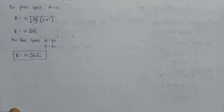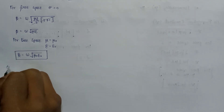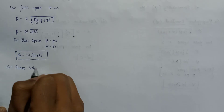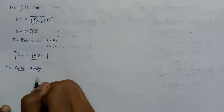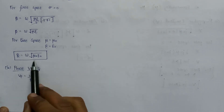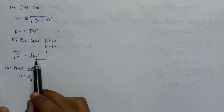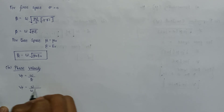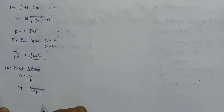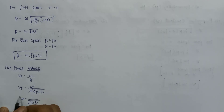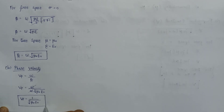The fourth factor is phase velocity, represented by vp, which equals omega divided by beta. Since we calculated beta as omega times the square root of mu zero·epsilon zero, substituting gives vp equals omega divided by omega times the square root of mu zero·epsilon zero. The omega terms cancel, and the final value of phase velocity equals 1 divided by the square root of mu zero·epsilon zero, when the wave is propagating in free space.